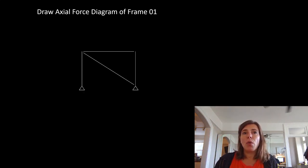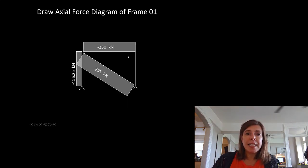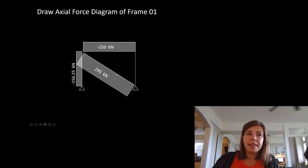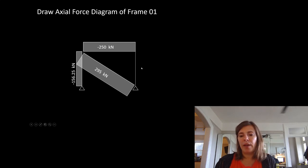Let's draw our axial force diagram on our frame. This nice little diagram lets us see quite quickly that one member is in tension, two are in compression, and we actually have no load in that column right there.